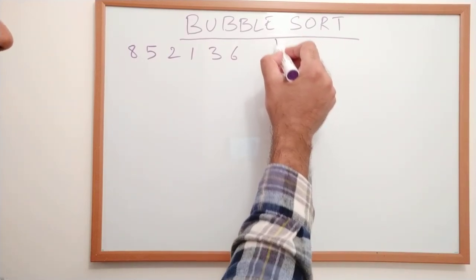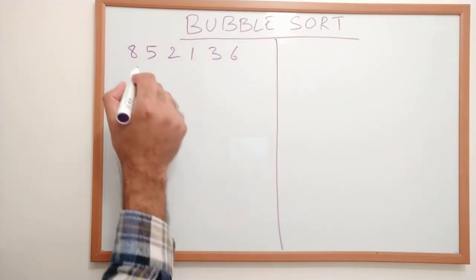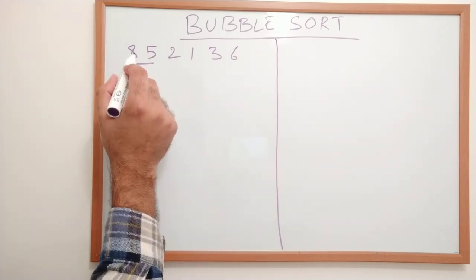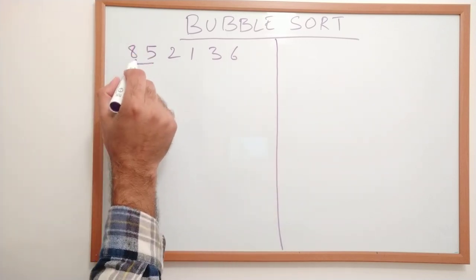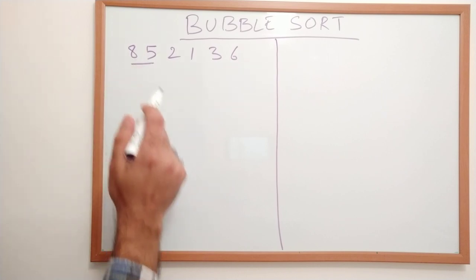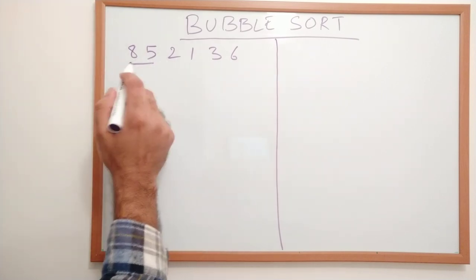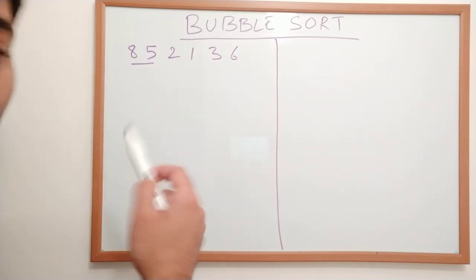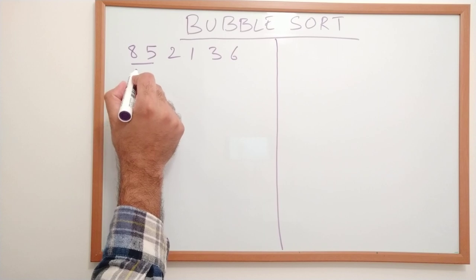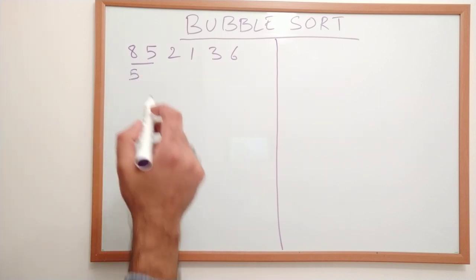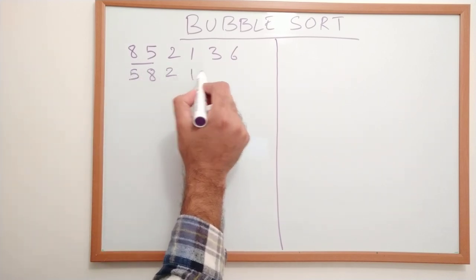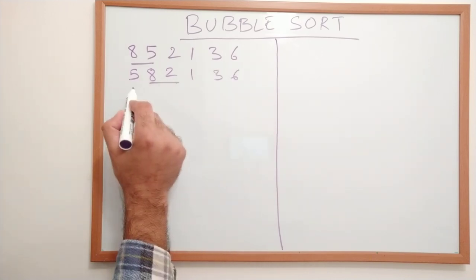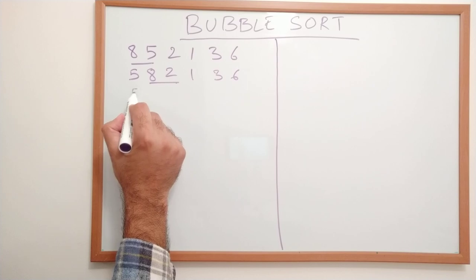We start the iteration at the first position and compare it with the next item in the list, which is 5. Comparing 5 and 8, we can see we need to swap them. The list will become 5, 8, 2, 1, 3, and 6. Then we compare 8 with 2 and again we do a swap.